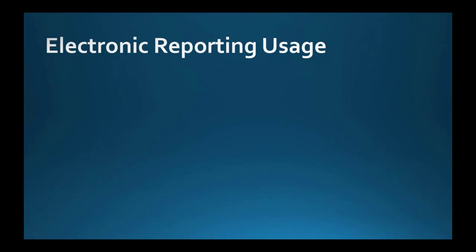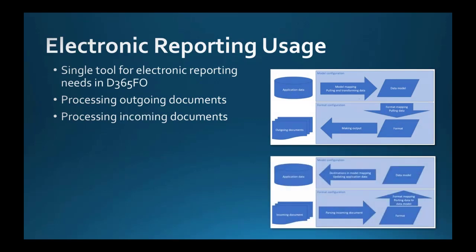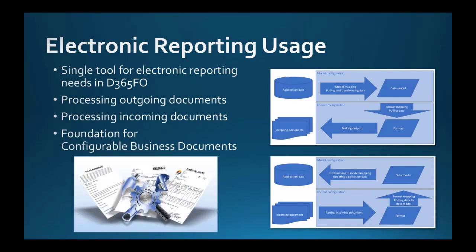Electronic reporting per se has been around for a few years now. Microsoft says that it replaced about 20 different frameworks that were previously dealing with electronic reporting in D365FO. Now it is a single tool for all electronic reporting needs. It was primarily designed for processing outgoing and incoming electronic documents, as you can see on the two images which I borrowed from Microsoft's tutorials. Probably the most interesting usage of electronic reporting is for configurable business documents. Configurable business documents were announced in June 2019. They integrate into electronic reporting by using its configurations, data model, data model mapping, format, format mapping and the templates, Excel and Word files with placeholders for data. We will go more in details about configurable business documents in the next two webinars in December. Today we are going to talk about electronic reporting basics, which will give us the foundation to build on.